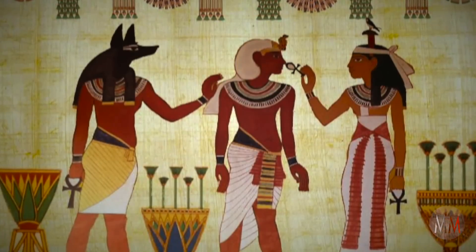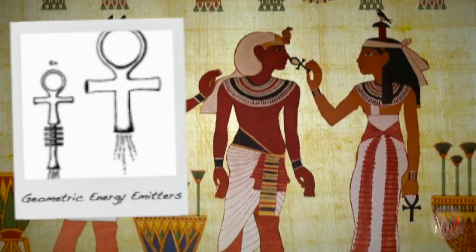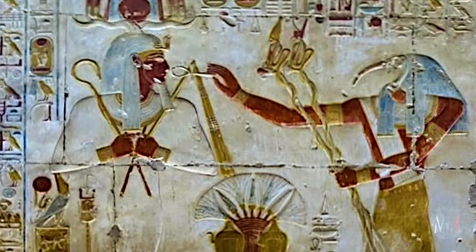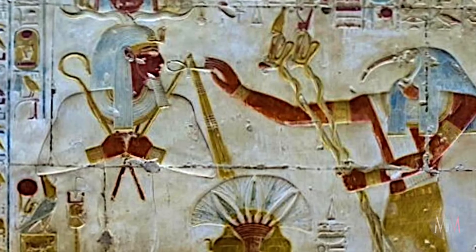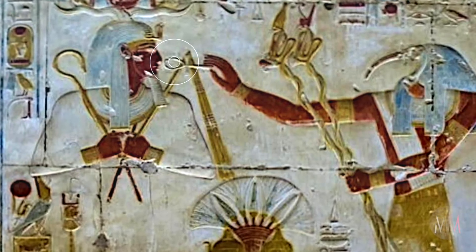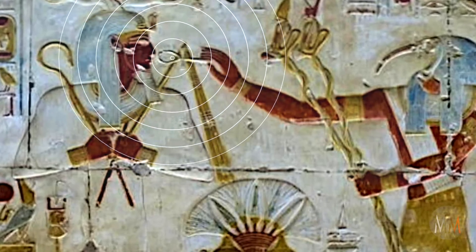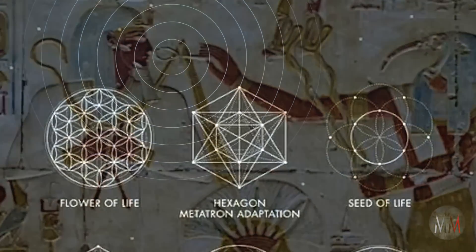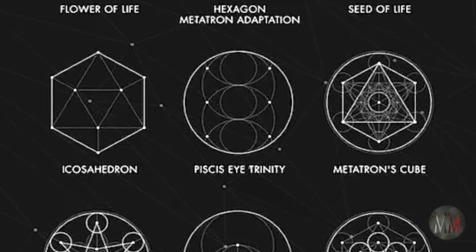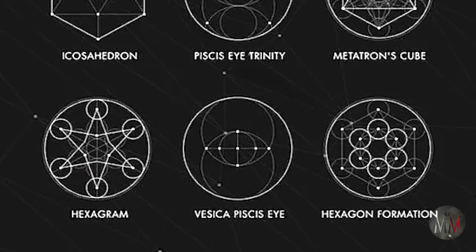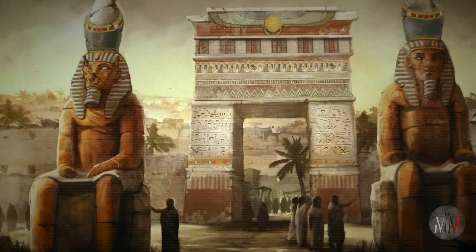When we see all these pictures of geometric energy emitters being used for interaction between the netters — the higher conscious forces of nature — and human beings at the higher initiate level, there are particular subtle radiations coming from geometric shapes and forms. That is the true science of sacred geometry. Much of what we describe in modern metaphysics with sacred geometry is an intellectual aspect of it, but not the actual energy science. In ancient Egypt, they used the energy science of sacred geometry and the power of the shape-caused wave.